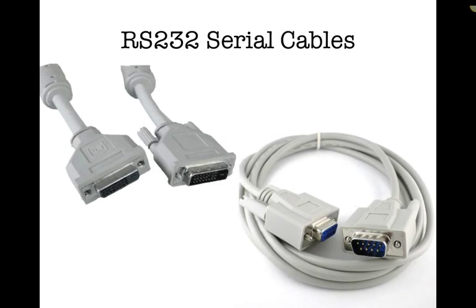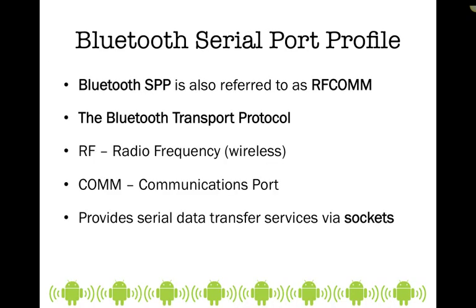Back in the early days of computers, in order to connect devices, we used cables — more specifically, the RS-232 serial cables. These have sort of disappeared over the past several years. Older computers and older technology used these types of cables, but they have fallen by the wayside and are being replaced by FireWire and USB cables, and now Bluetooth. So the Bluetooth Serial Port Profile, or SPP — also referred to as RF-COM — is the Bluetooth Transport Protocol. RF stands for radio frequency, which means it's wireless and uses radio signals, and COM is for communications port. This provides serial data transfer services using sockets.